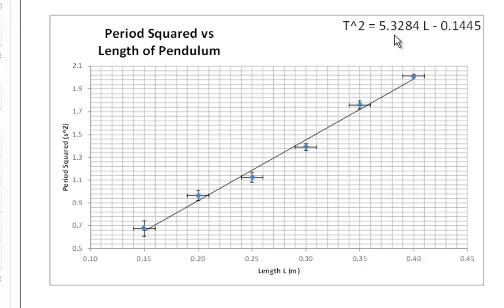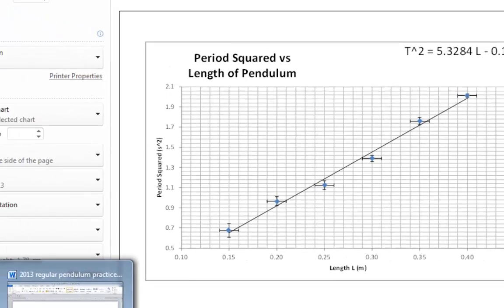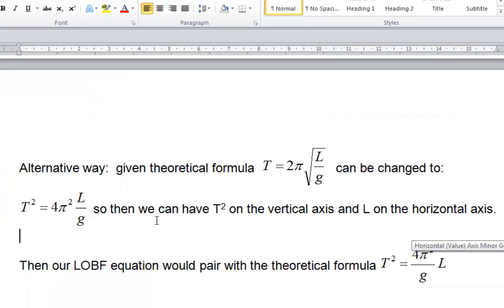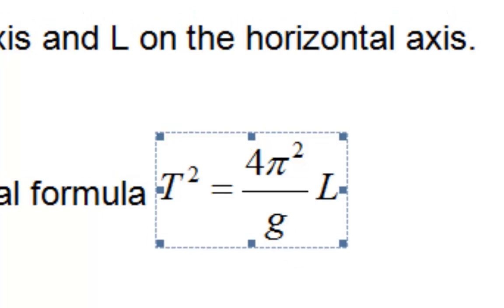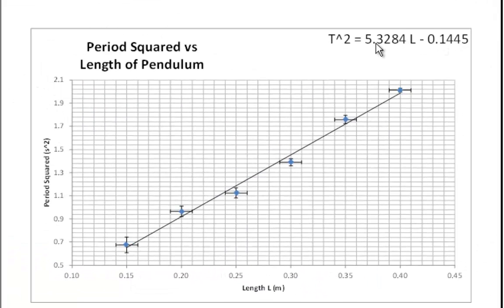Now, we also can think back to this, that a lot of kids decided to do T squared instead of the square root of L. And that means the gradient on our graph is now 4 pi squared on top of G, a theoretical gradient, I should say. If you calculate that, then you can compare to your 5.3. That's your merit-level conclusion. Again, check all your notes for other information.